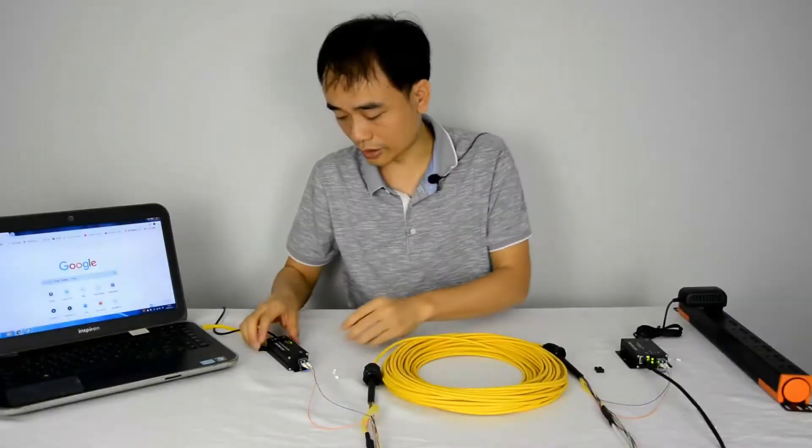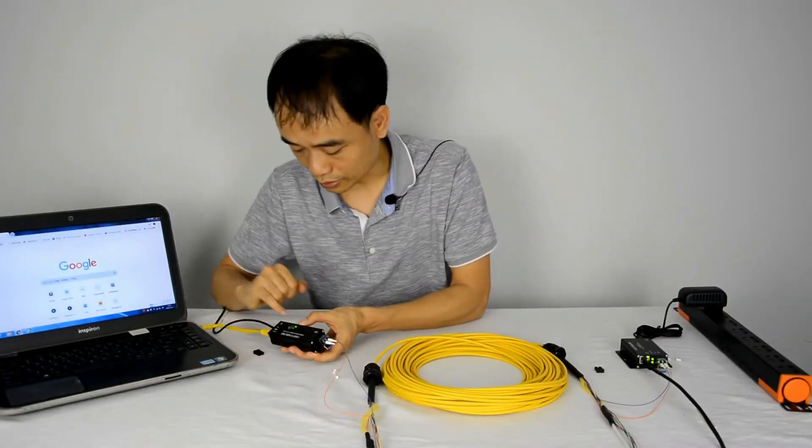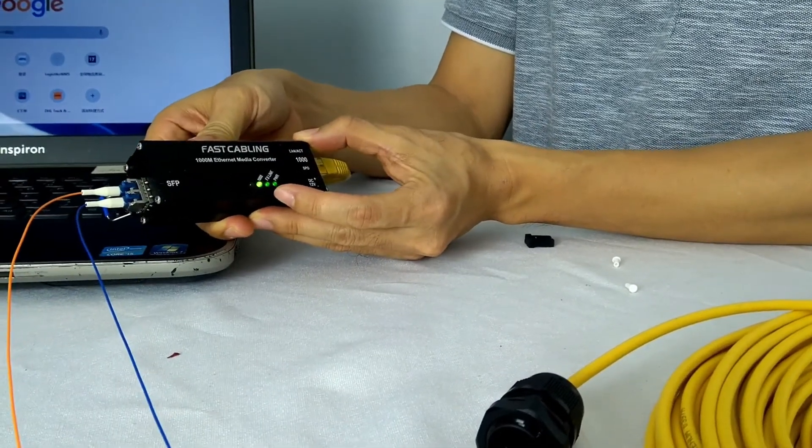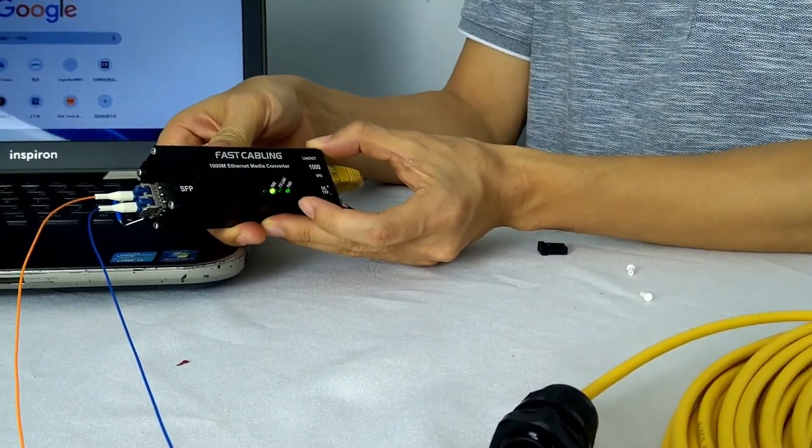Now, once we power up, you can see both the network fiber link. Also, the power is turned on. The fiber link is flashing, which means the data is transmitted through the fiber optic cable.